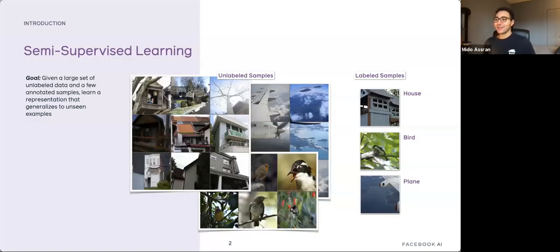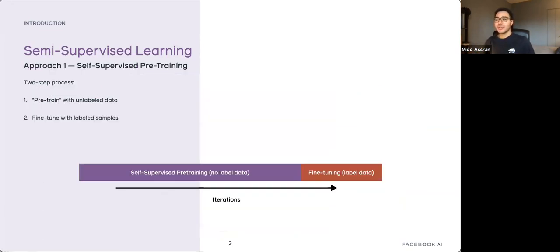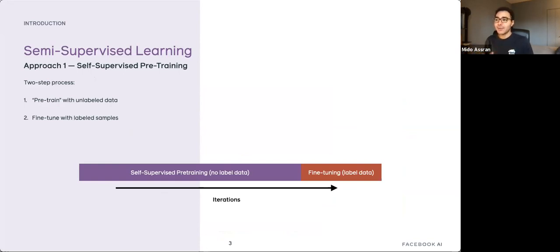In semi-supervised learning, you have a large set of unlabeled images and a small set of labeled images. The goal is to learn representations that generalize to unseen examples by leveraging both the labeled and unlabeled images. One existing approach is self-supervised pre-training followed by supervised fine-tuning. During the self-supervised phase you only learn with unlabeled data, and then at the end you fine-tune your model on the small amount of labeled examples you actually have.